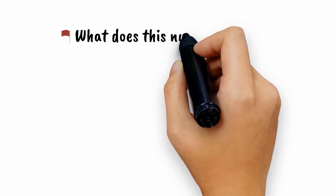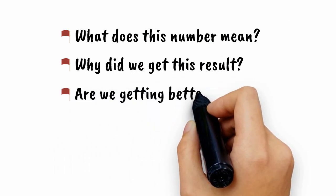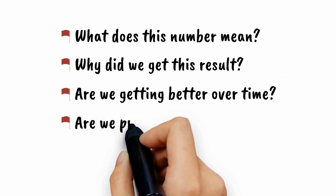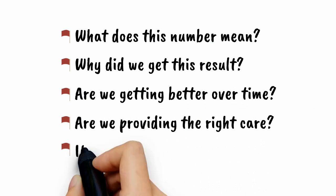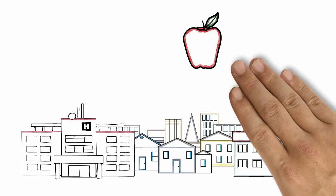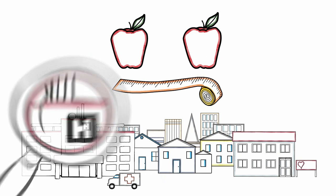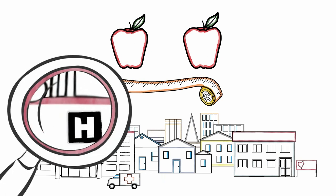But what exactly is an indicator? An indicator acts like a flag that draws your attention to something that's going on and makes you ask questions — like, what does this number mean? Why did we get this result? When we look at trends, are we getting better over time? Are we providing the right care? How are we doing compared to benchmarks, peers, or others? An indicator provides a standard way of measuring and comparing a problem or area of focus. This standard and comparable information helps you understand how well you're doing and where you could improve.